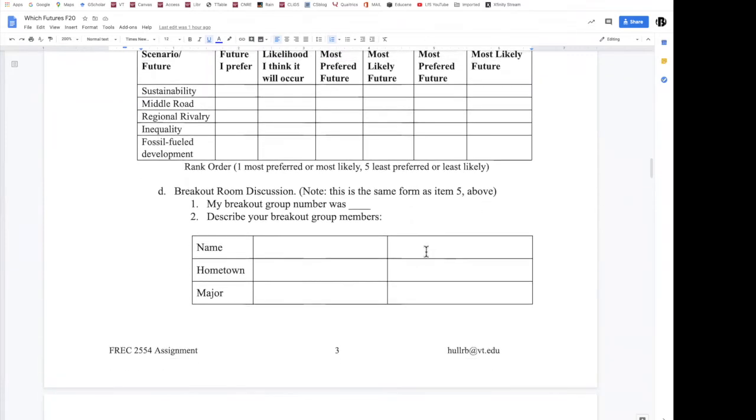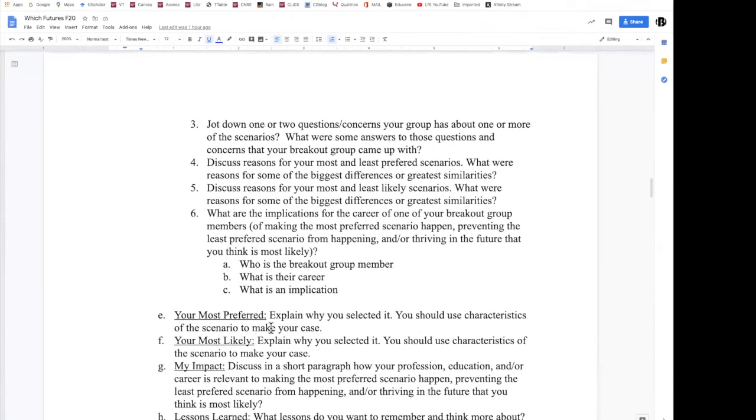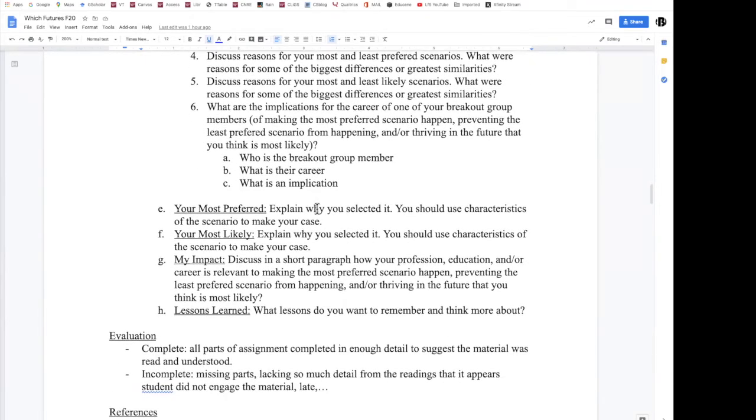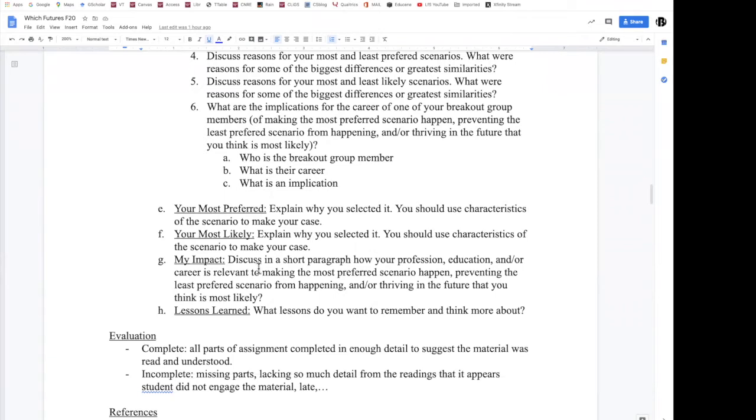Who are they, where are they coming from? Basically jot down the answers to the questions that you discussed while you were together, and then give a little bit more serious thought to really, what are the most preferred, the reasons for the most preferred, most likely, and the impacts on your career and what you should be studying and overall lessons learned.